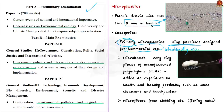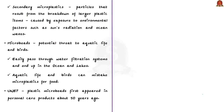Microbeads are very tiny pieces of manufactured polyethylene plastic added as exfoliants in health and beauty products such as cleansers and toothpastes. Remember: microbeads are microplastics used in many health and beauty products. We also have microfibers, which are also primary microplastics. These microfibers shed from clothing and other textiles such as fishing nets. The second category is secondary microplastics — particles that result from the breakdown of larger plastic items such as water bottles.